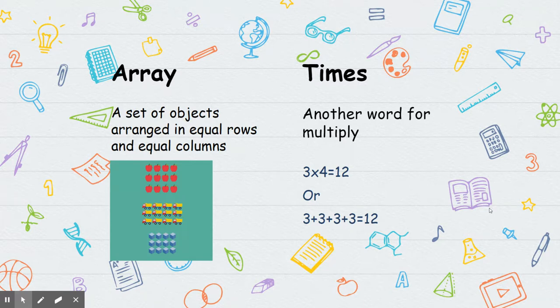And again, multiplication is just repeated addition. So 3 times 12 is actually 3 plus 3 plus 3 plus 3 equals 12.